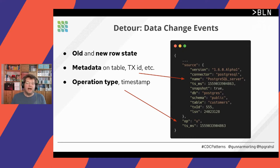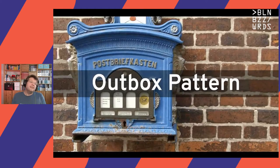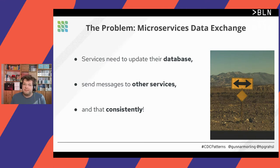Now let's see how we can use those change events for implementing distributed interaction patterns. The first is the outbox pattern. For each pattern, we'll briefly discuss what problem we're trying to solve. Very often we have a situation where a service needs to update its own database, and at the same time notify other services about the change that happened.